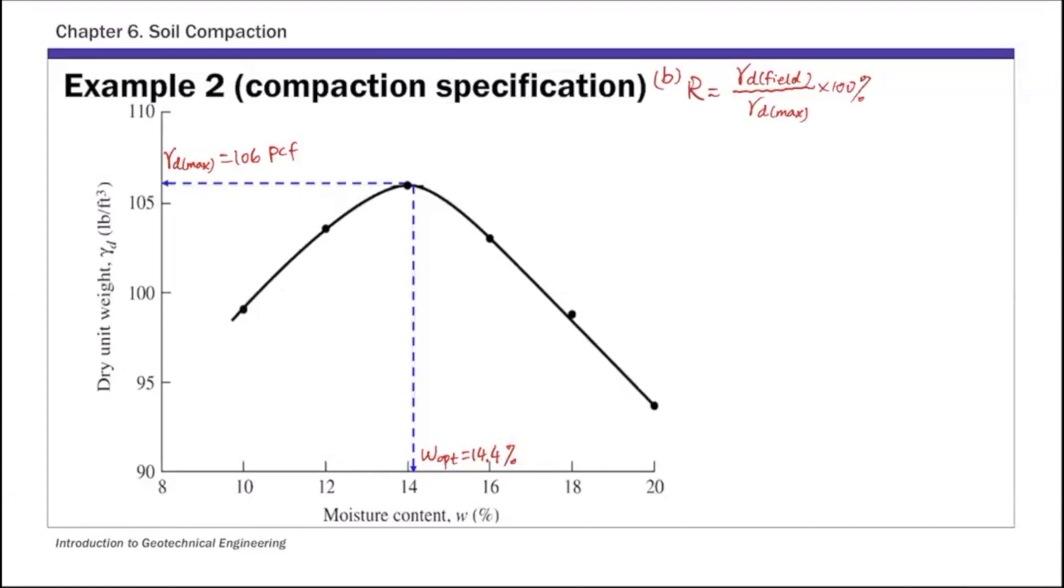In this example, the specification asks for 95% relative compaction. So this equals to 95%. And then gamma d max, remember that's from standard proctor test, so we know this gamma d max is 106 PCF, 106 pound per cubic foot. But then you can calculate the field dry unit weight, gamma d field. So this is 95% of gamma d max. That's about 100.7, so that's 95% times gamma d max. So that's 100.7 PCF, that's gamma d field.